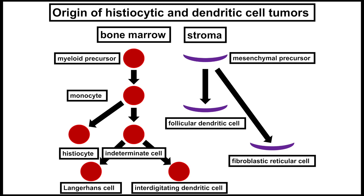Other forms of dendritic cell tumors are actually derived from the stroma. These are not from the bone marrow — these are mesenchymal derived cells. These include follicular dendritic cells, the specialized cells that live in lymphoid follicles and mix with B lymphocytes, and another cell type, the so-called fibroblastic reticular cell. These are mesenchymal cells that also reside in lymphoid organs, but can sometimes also be found in soft tissue sites.